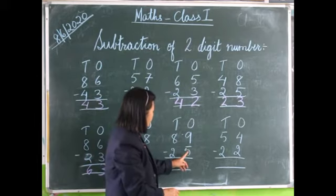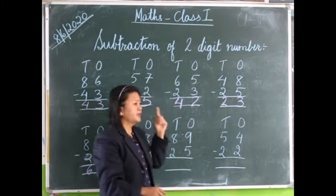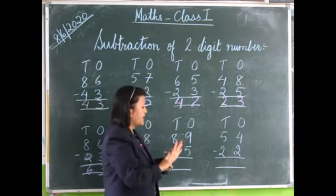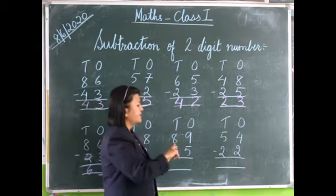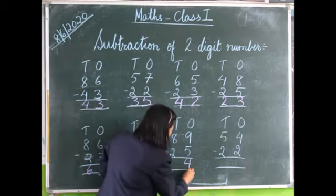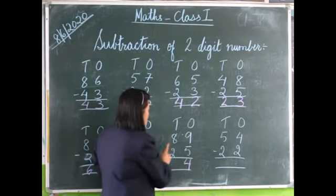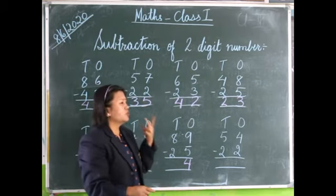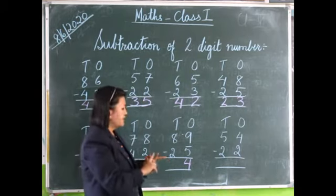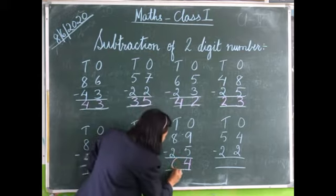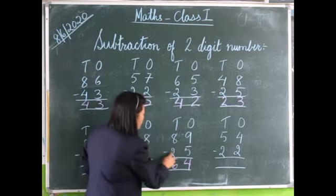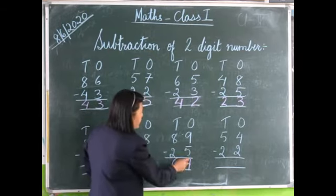Nine minus five. Nine on the head, five in our fingers. We count backwards: nine, eight, seven, six, five, four. Now eight minus two. Eight on the head, two in our fingers. We count backwards: eight, seven, six. Therefore, 89 minus 25 is equal to 64.